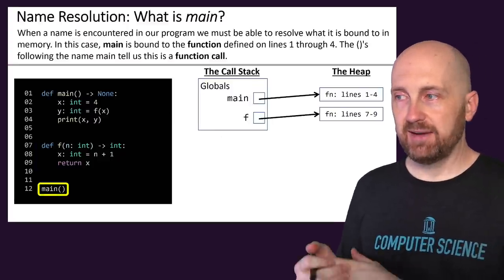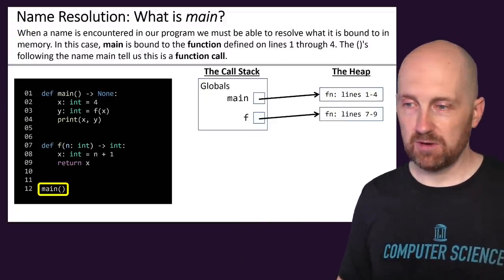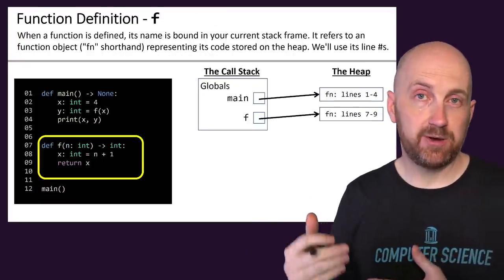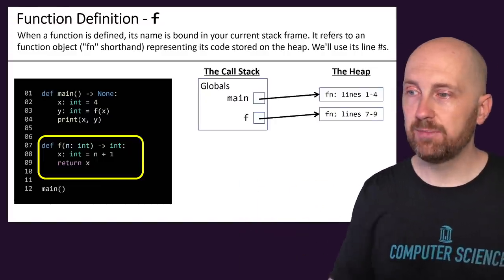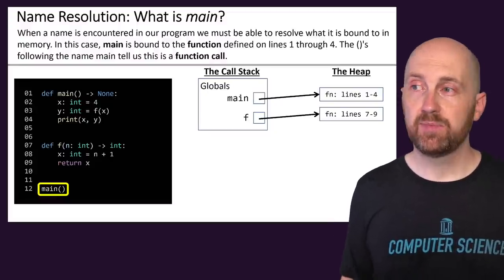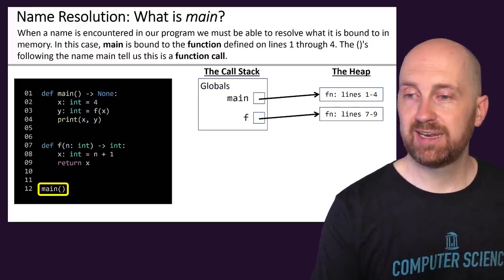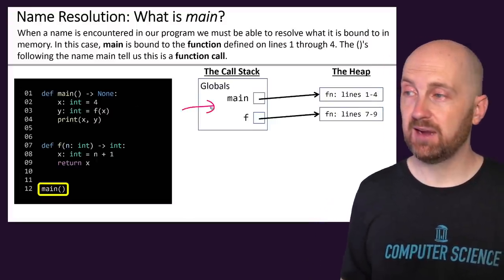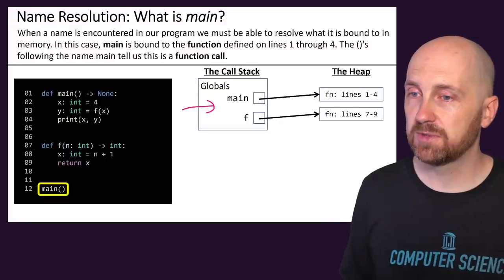The next thing that happens after these two definitions are read — and remember, we're not actually calling those functions yet — is that on line 12 we reach the call to main. At this point we've just evaluated these definitions, so we have these recipes or sub-programs stored on our heap, bound to names on the call stack. When we reach this call to main, we say: do we even know what main is? We use a process called name resolution — we look in our current frame on the stack, and globals is the only frame on the stack, so we look at globals.